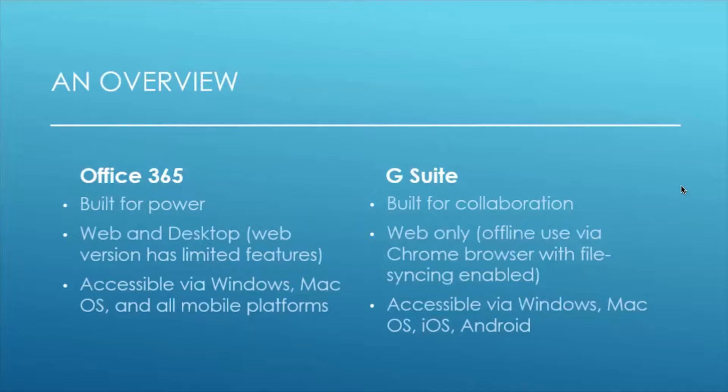The desktop applications are far more powerful than the online equivalents. Online you're looking for speed, stability, and ease of use, but if you really need to get into the details of those applications, the desktop version in Office 365 is far more powerful. Office 365 is available on Windows, Mac OS, and all mobile platforms including Windows Phone, whereas G Suite is not natively available on Windows Phone — you can use it via web, but it is not built in.